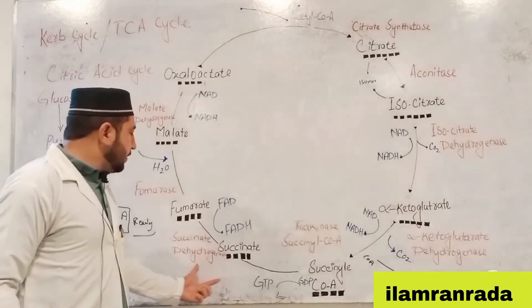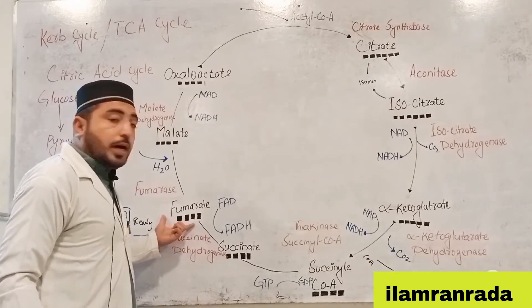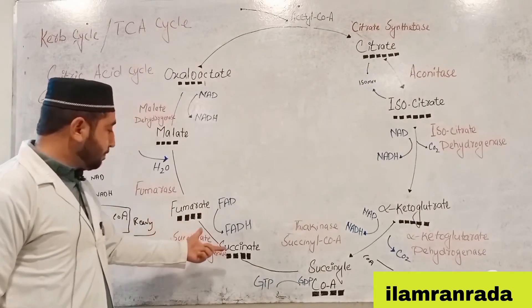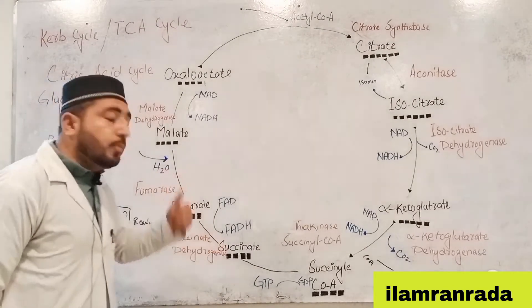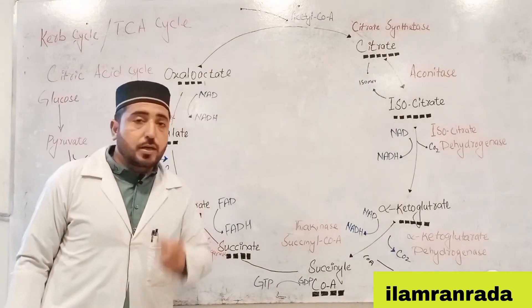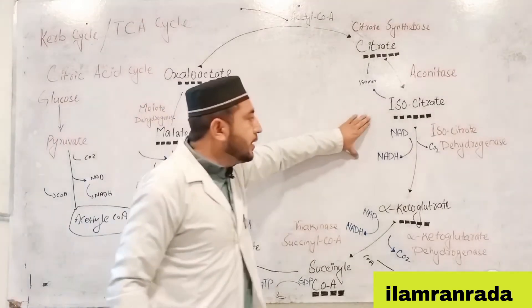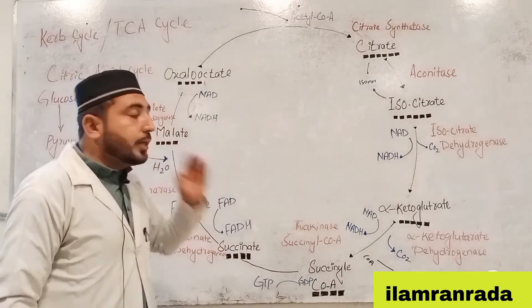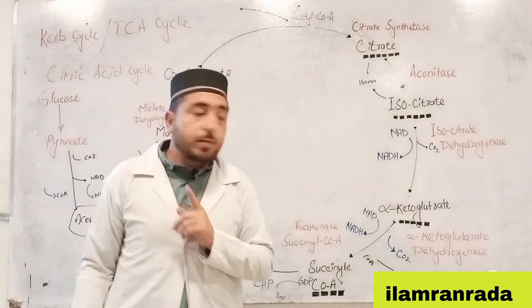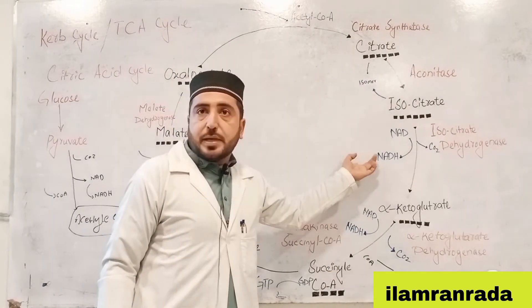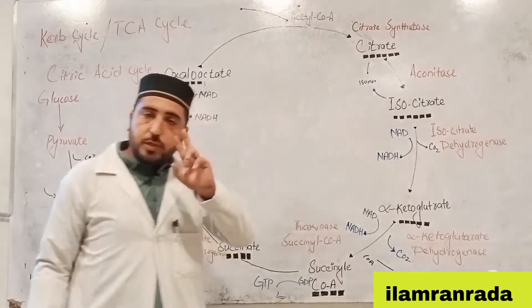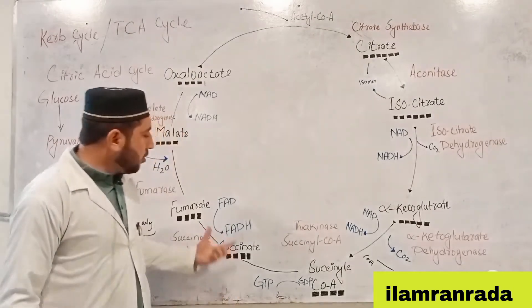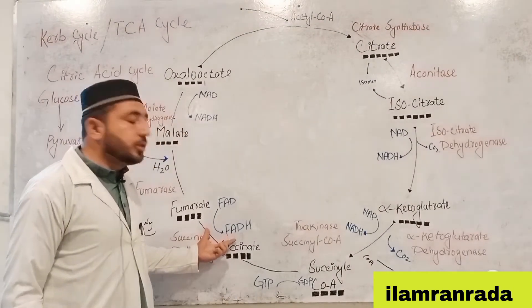Students, the Krebs cycle also produces fumarate. Fumarate is produced with FADH2, when succinate is oxidized by succinate dehydrogenase. Students, NADH and FADH2 are produced as hydrogen carriers. Two hydrogen atoms are removed to form NADH, and FADH2 is also produced.